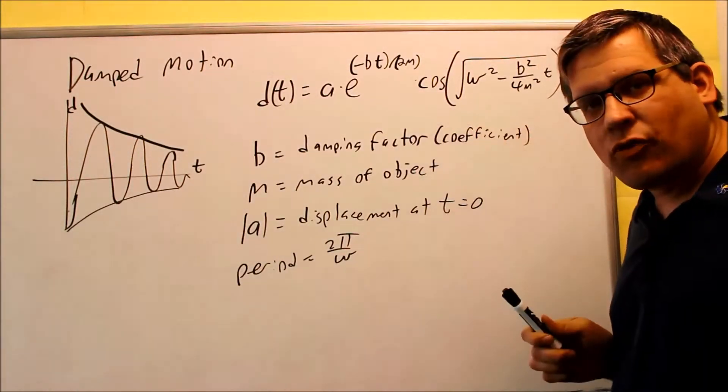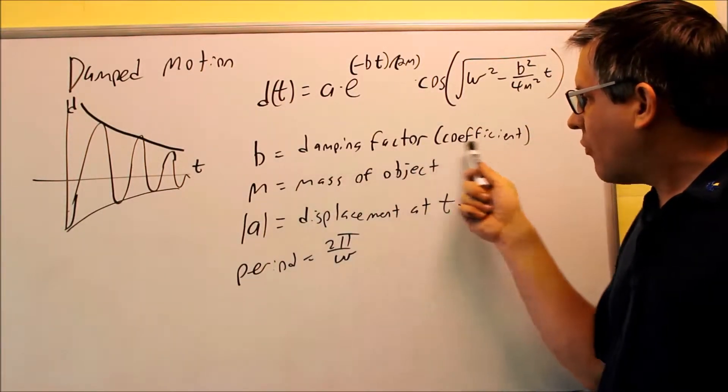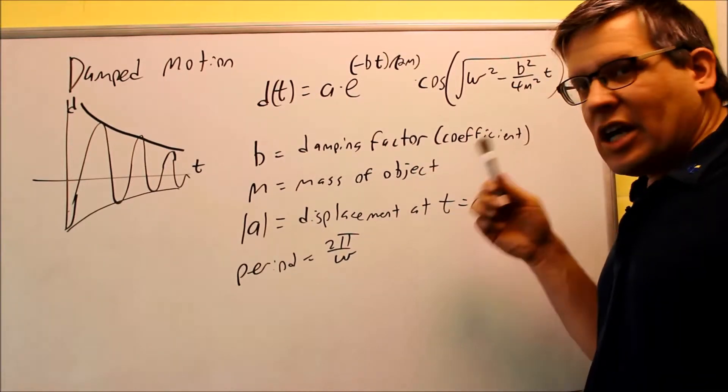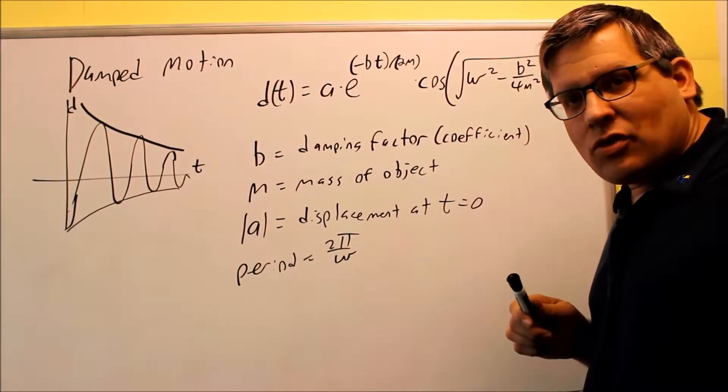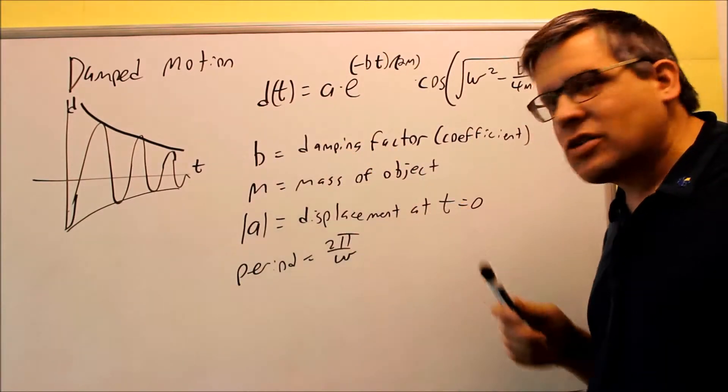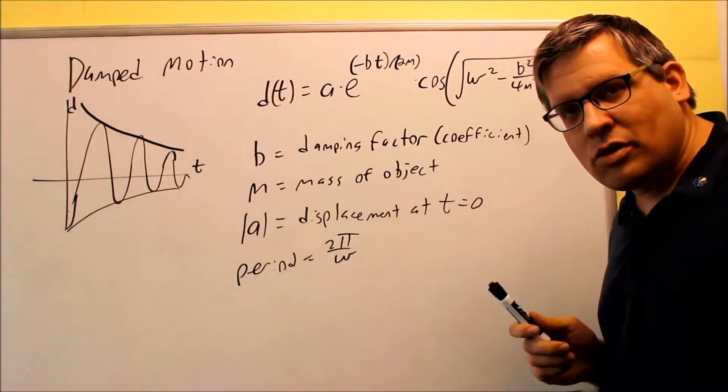Now we have a couple other variables that are in this formula. Your B would be a damping factor. That's your coefficient. So it depends on how much resistance that you have, the air resistance or friction. The M is the mass of the object. That does have an effect also with damping.